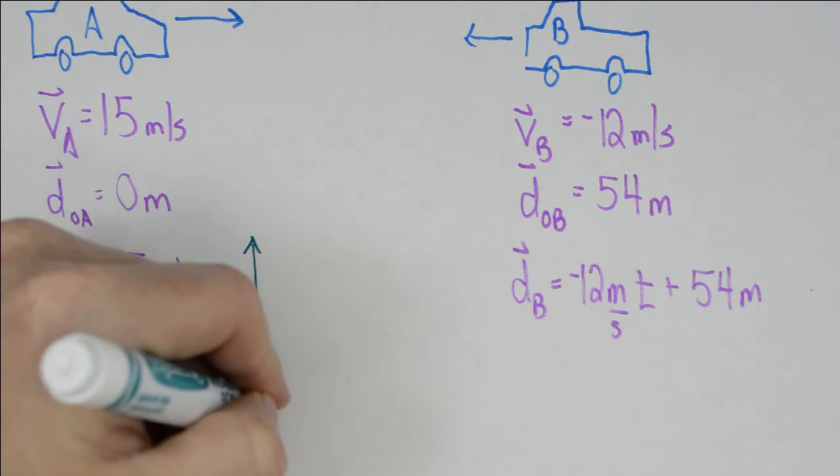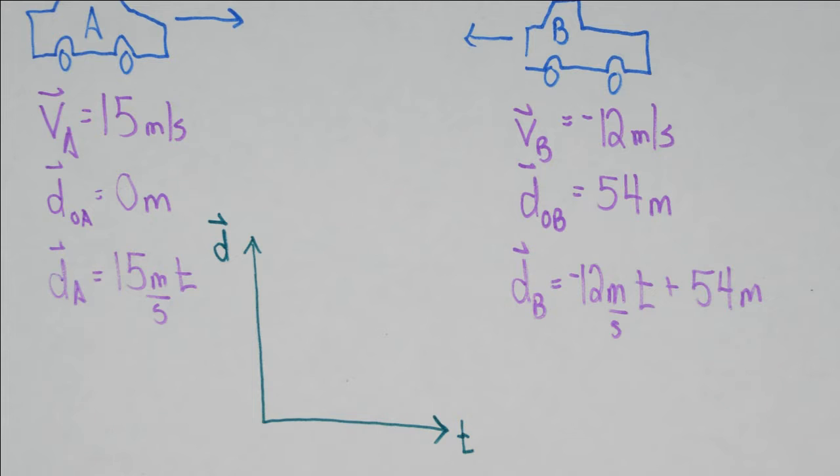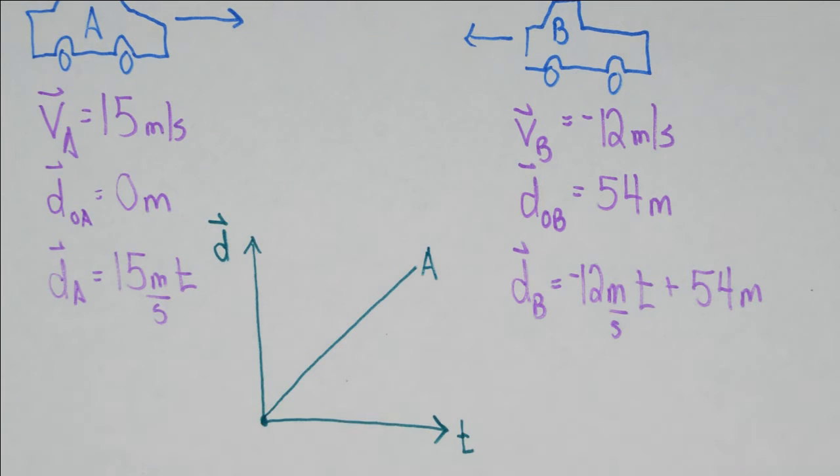We can consider the graphical interpretation of this, and so if we consider our position-time graph, what's going to happen is if we look at A, A is going to be a straight line starting at the origin, and it's going to have a positive slope.